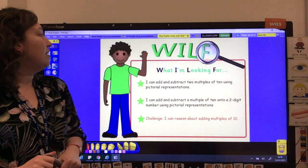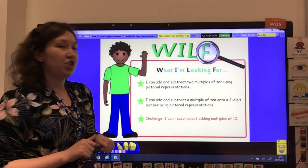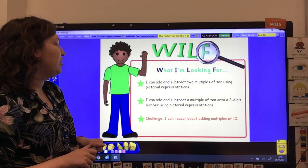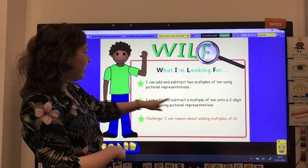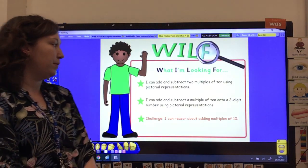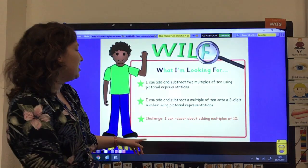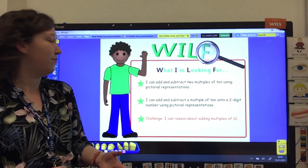Okay, today, what am I looking for in your work? I can add and subtract two multiples of 10 using pictorial representation. So that's drawing your sticks and stones. And I can add and subtract a multiple of 10 onto a two-digit number using pictorial representation. So this is where we had a two-digit number with 10s and with 1s, a bit like our 72.